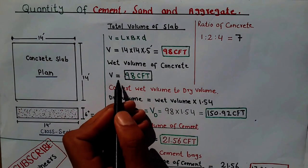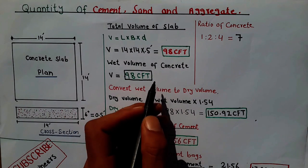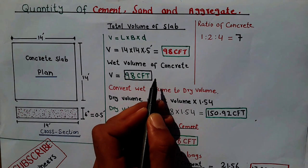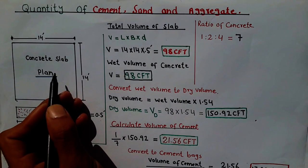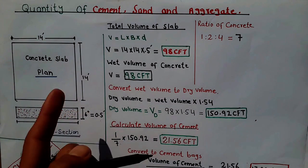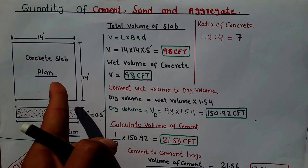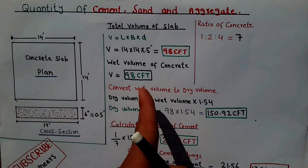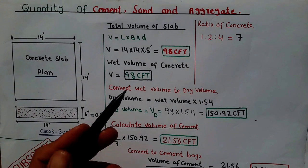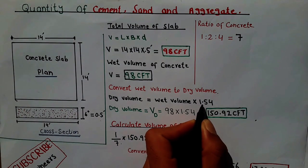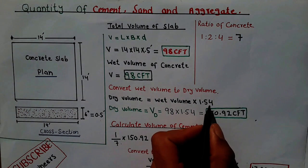Now I want to convert the wet volume to the dry volume. Why do we convert wet volume to dry volume? Because we bring dry material for this slab. When we add water to the dry material, it decreases the volume from dry to wet. Therefore we have to convert the wet volume to the dry volume.